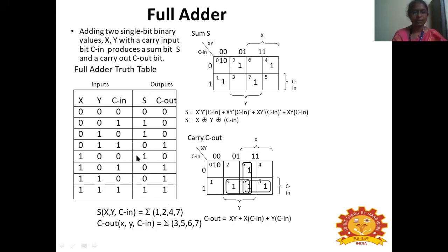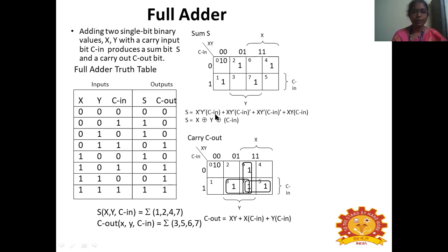Let us calculate the min terms for sum as well as for carry. For sum, the min terms are 1, 2, 4, and 7. The sum of products is X'Y'CIN + XY'CIN' + XY'CIN' + XYCIN. If we resolve this expression, it is an XOR function: X XOR Y XOR CIN.